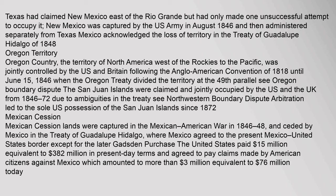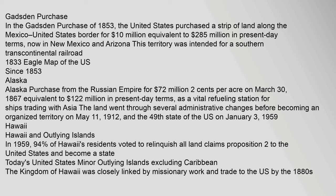Mexican Cession: lands were captured in the Mexican-American War in 1846–48 and ceded by Mexico in the Treaty of Guadalupe Hidalgo, where Mexico agreed to the present Mexico–United States border, except for the later Gadsden Purchase. The United States paid $15 million, equivalent to $382 million today. In the Gadsden Purchase of 1853, the United States purchased a strip of land along the Mexico–United States border for $10 million, equivalent to $285 million today.